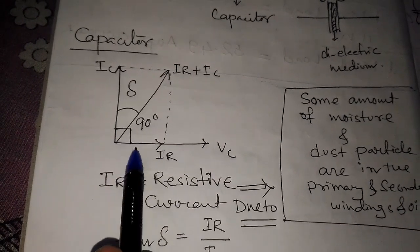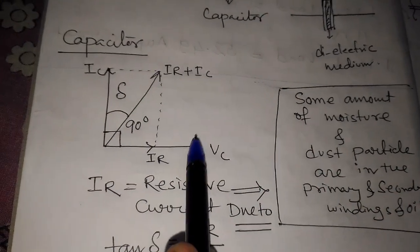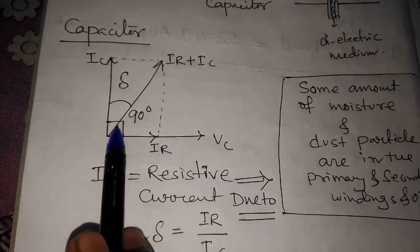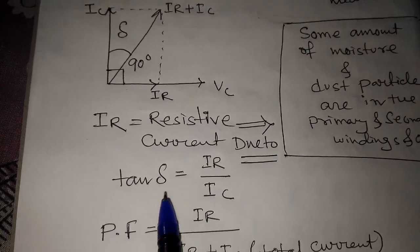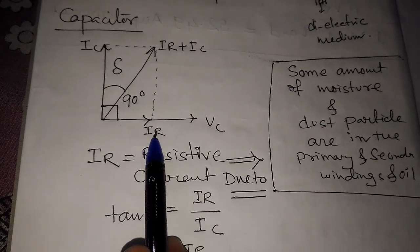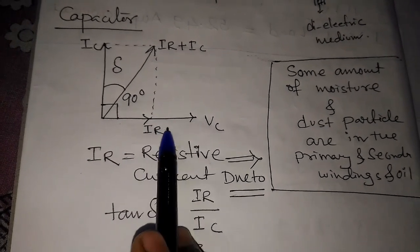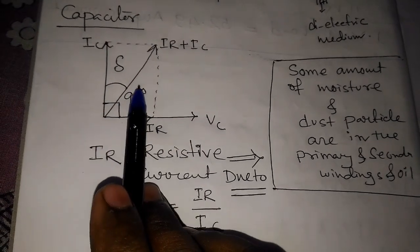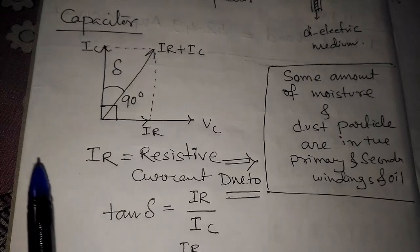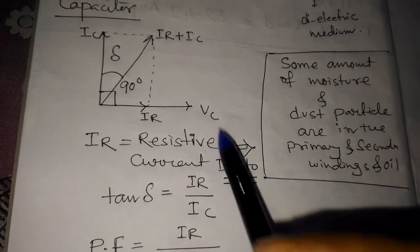For a pure capacitor, we get an angle of 90 degrees between voltage and current — the current leads the voltage by 90 degrees. In the case of the Tan Delta test, if we apply some voltage, some resistive current will flow through the winding. This resistive current will decrease the angle from 90 degrees.